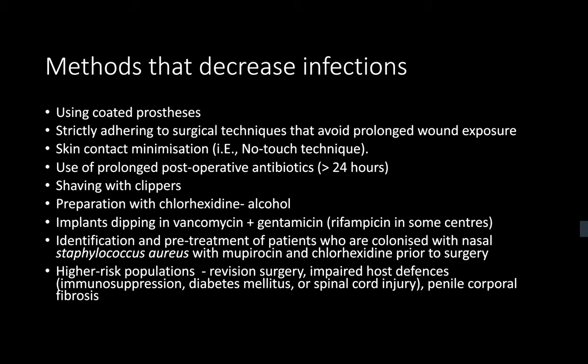Additional infection prevention measures include identifying and pre-treating nasal MRSA colonization with mupirocin, and taking extra precautions in high-risk cases such as revision surgery, patients with impaired host defenses like diabetes or immunosuppression, and especially when there is penile corporal fibrosis — which can occur after priapism. Positive air pressure flow theatres, as used in orthopedic surgery, can also help.